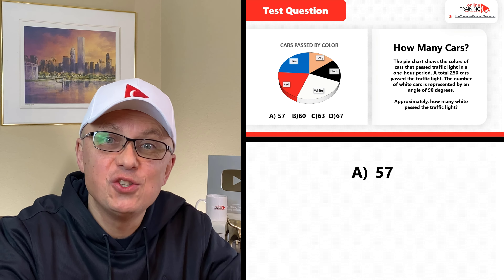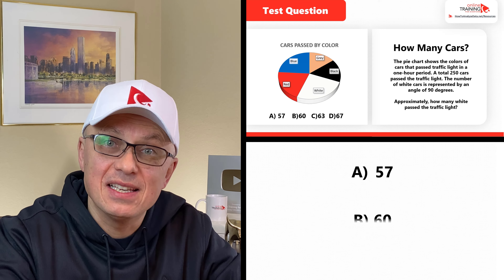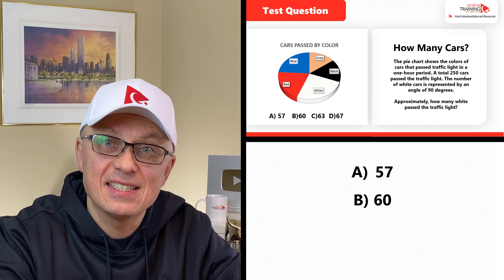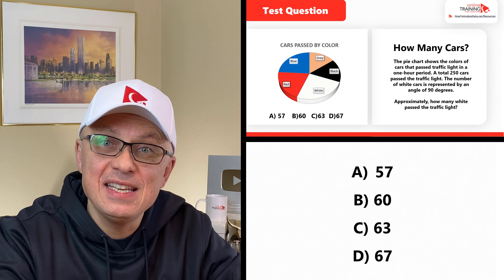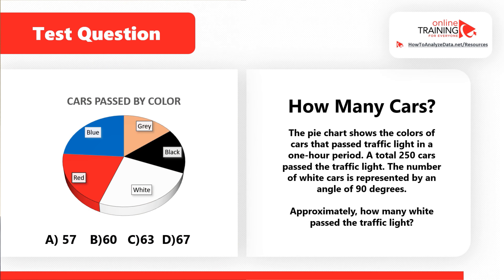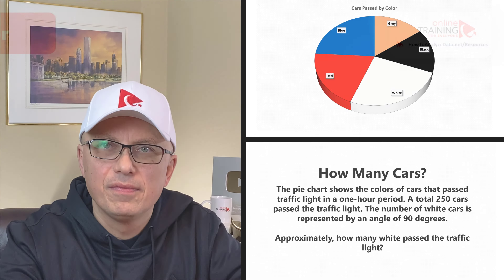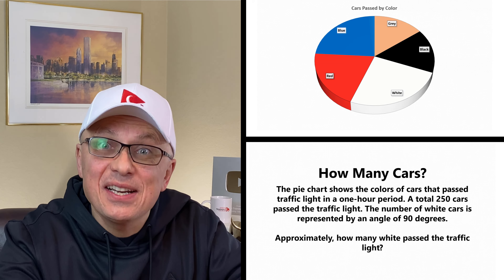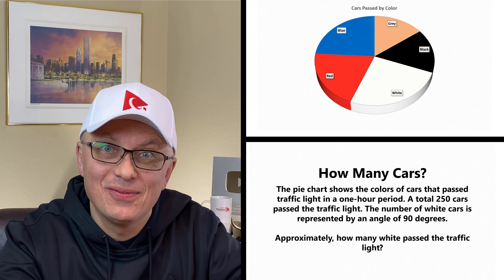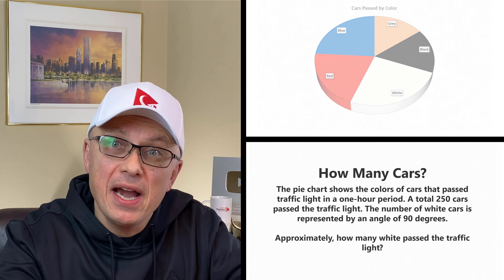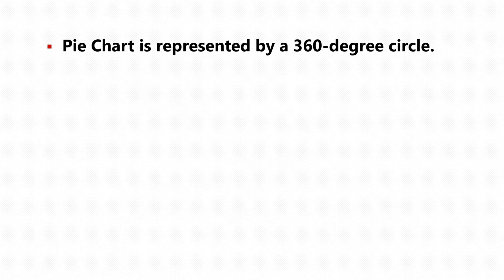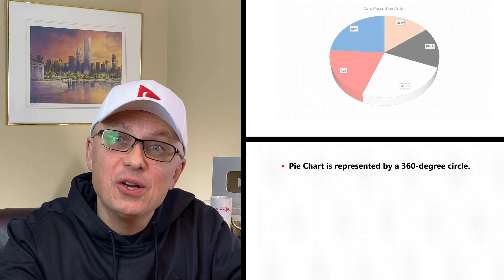Approximately how many white cars passed the traffic light? You're presented with four choices: A) 57, B) 60, C) 63, and D) 67. A lot of times the answer is given to you as part of the question — and this is one of those cases. The pie chart is represented by a 360-degree circle, and 90 degrees is a quarter of 360.